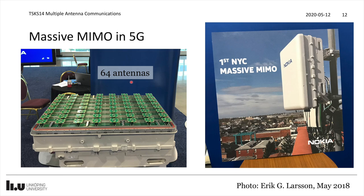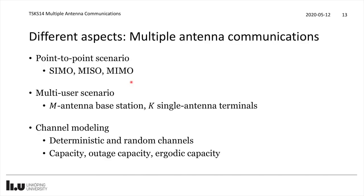What are the different aspects of multiple antenna communication covered in this course? First, the point-to-point scenarios: the SIMO channel, the MISO channel, and the MIMO channel. Then we moved on to the multi-user scenario where we have an M-antenna base station — for example 64 antennas as in the massive MIMO base station just described — serving K single-antenna terminals. I've also talked about channel modeling for multiple antennas, both deterministic cases with line-of-sight and random channel types such as IID Rayleigh fading.